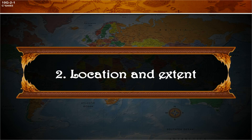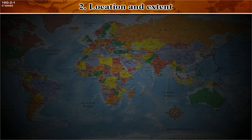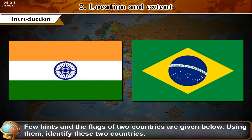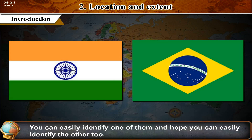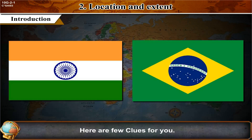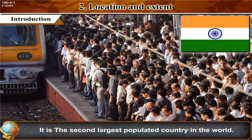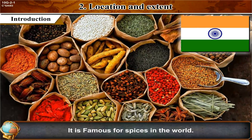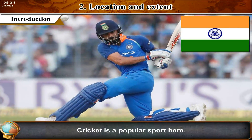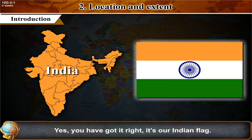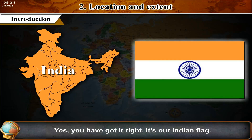Chapter 2: Location and Extent. Introduction — a few hints and the flags of two countries are given. Using them, identify these two countries. Clues for the first: it is the second largest populated country in the world, it is famous for spices, and cricket is a popular sport here. Yes, it is our Indian flag.